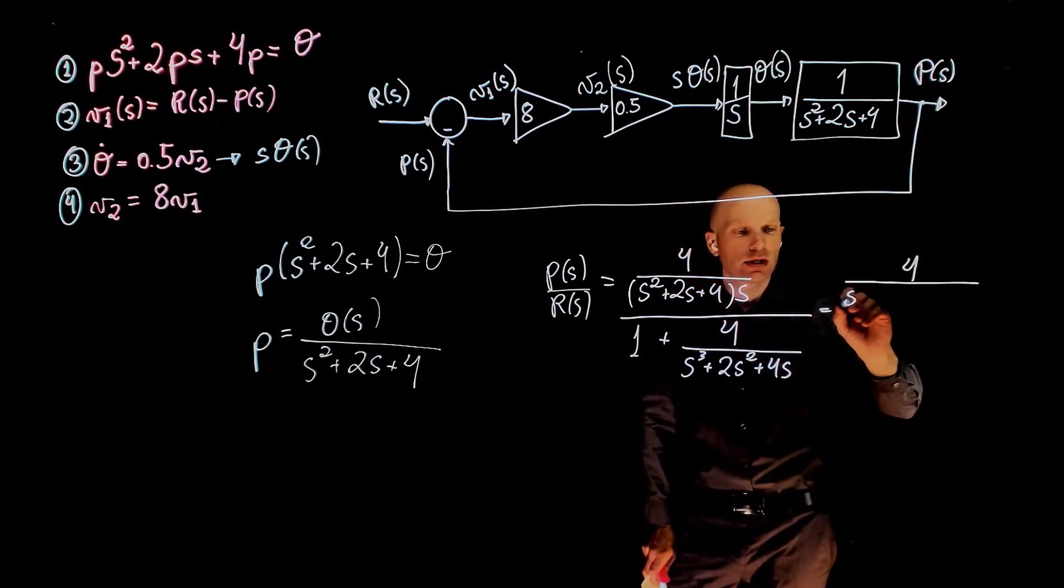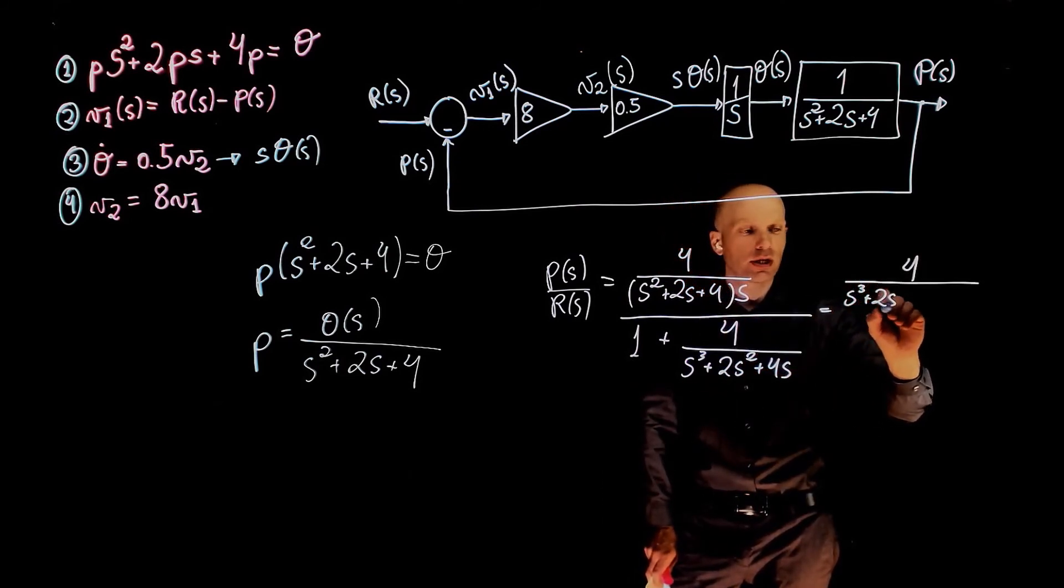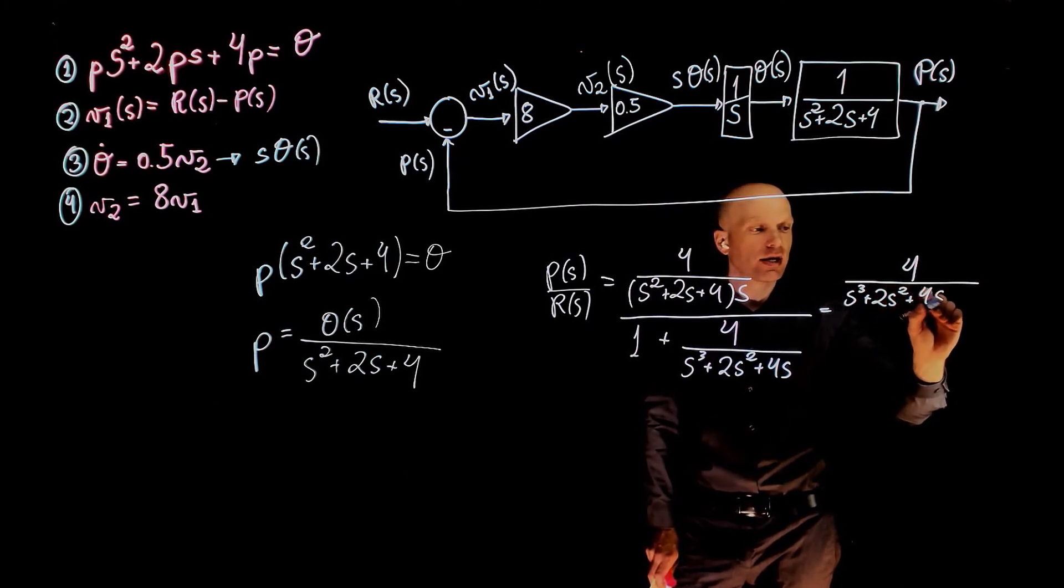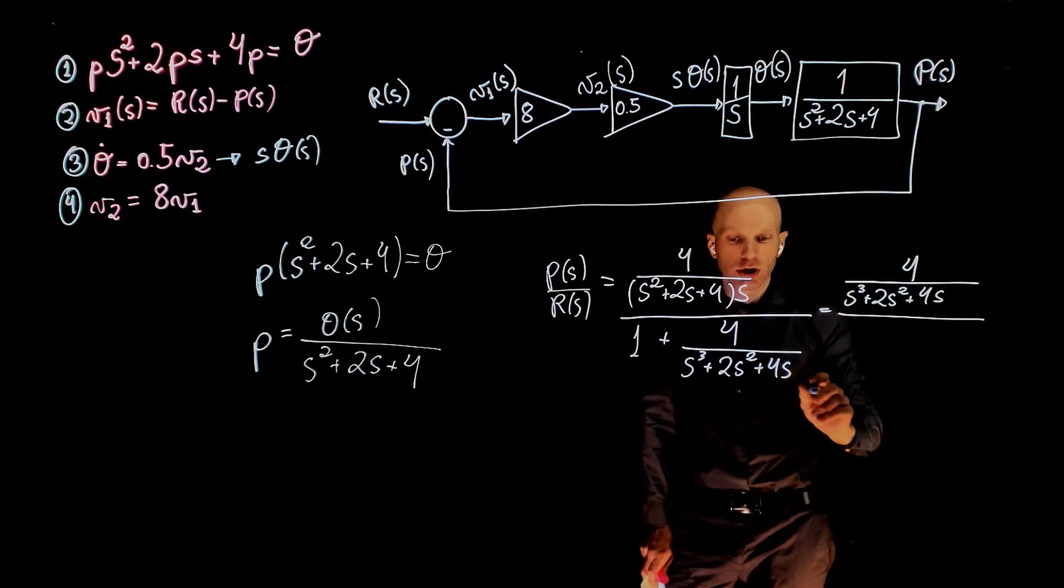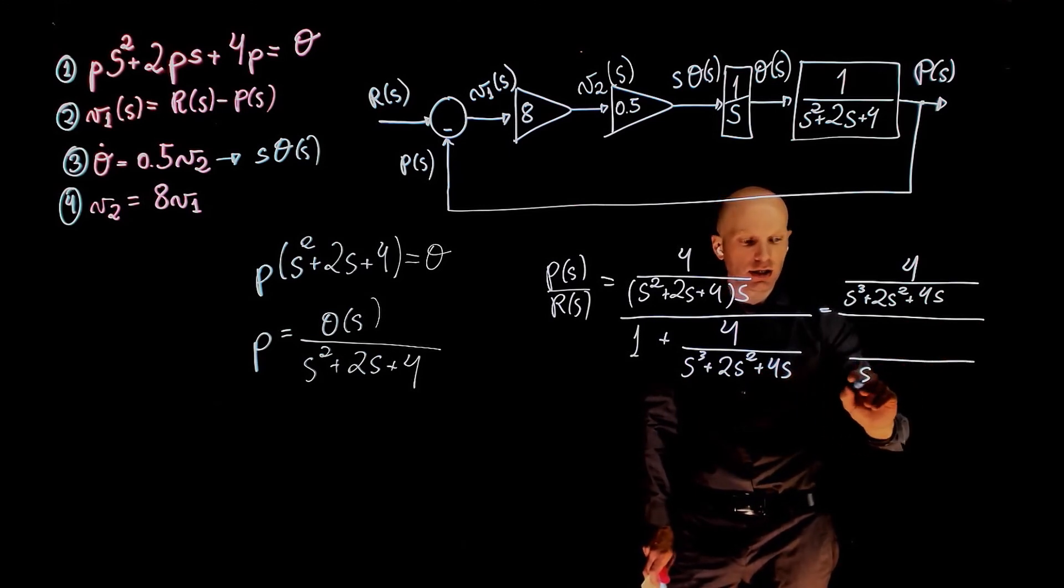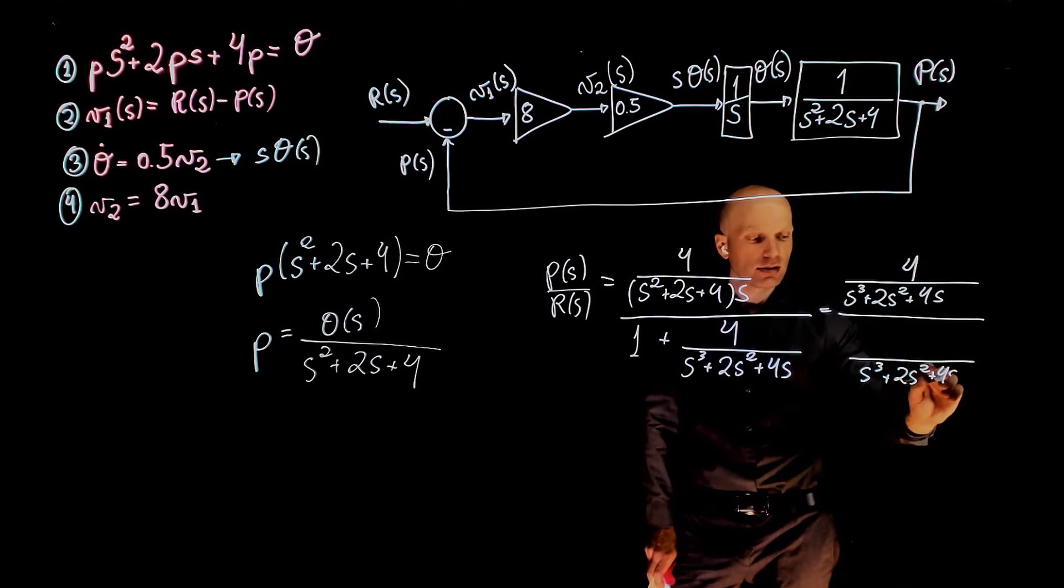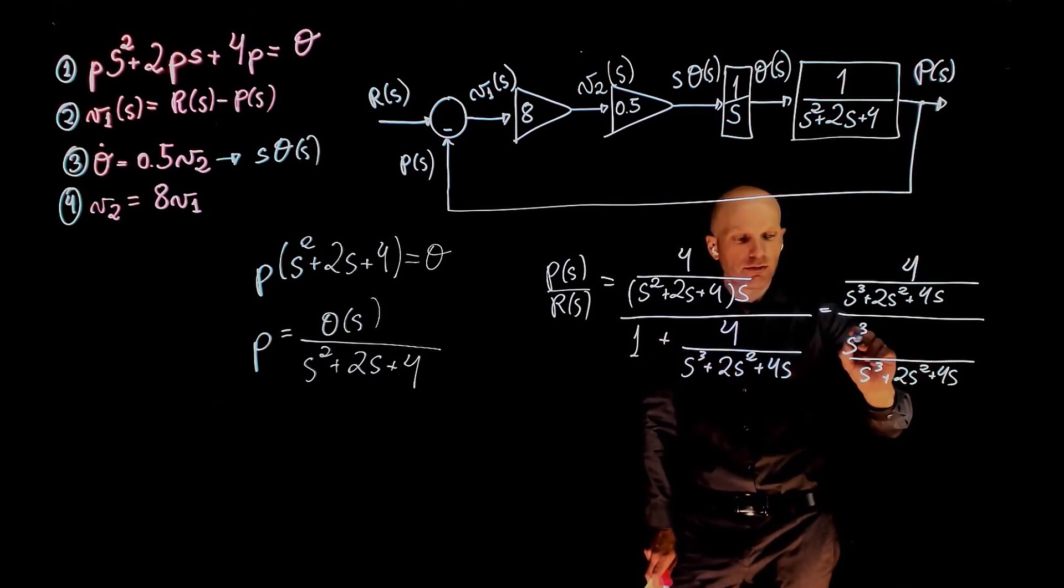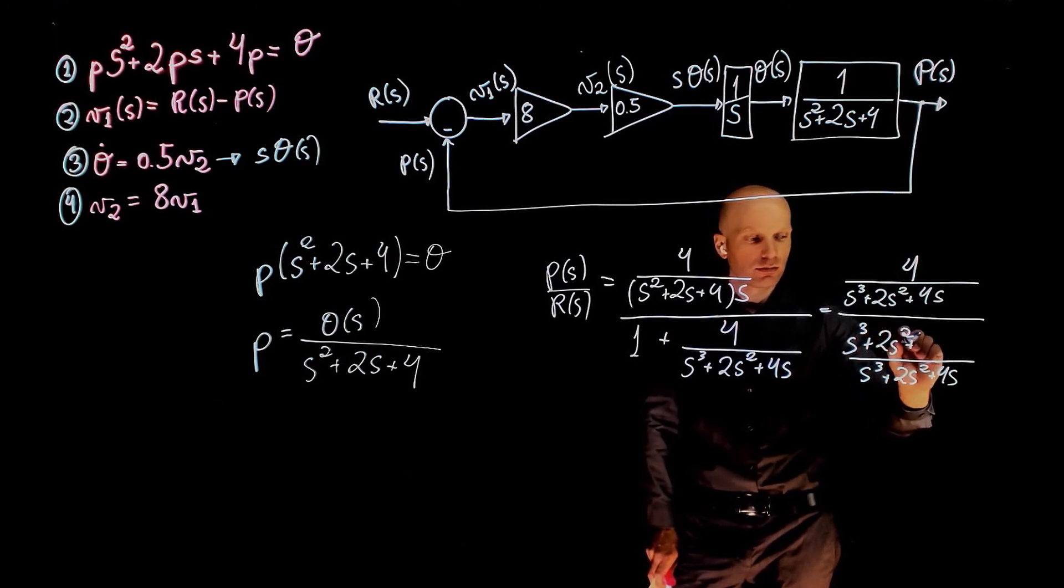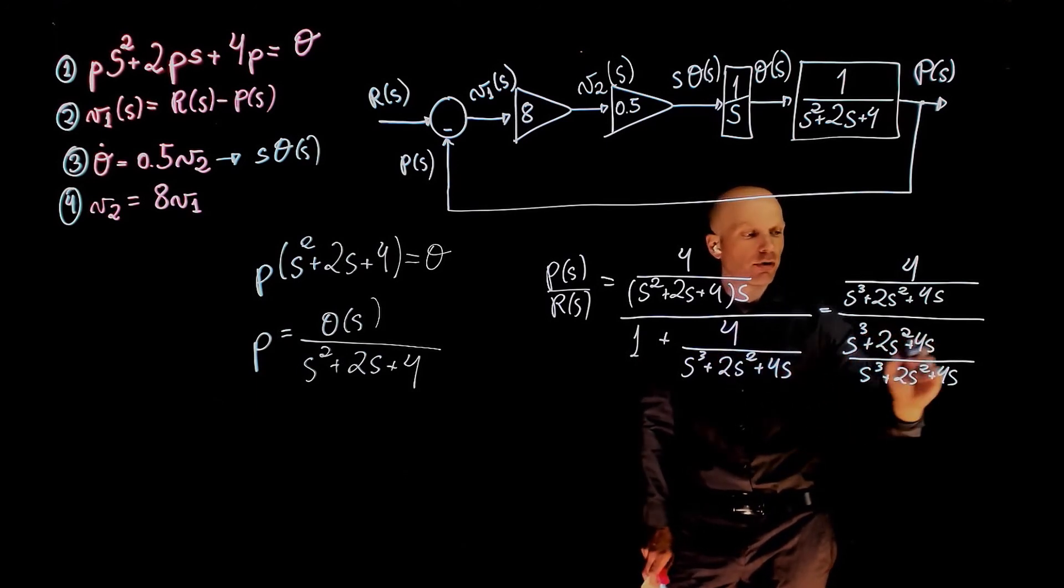And also expand this one: s cubed plus 2s squared plus 4s, divided by—now finding a common denominator here. The common denominator is, again, s cubed plus 2s squared plus 4s. This multiplied by 1 is itself, and plus 4.